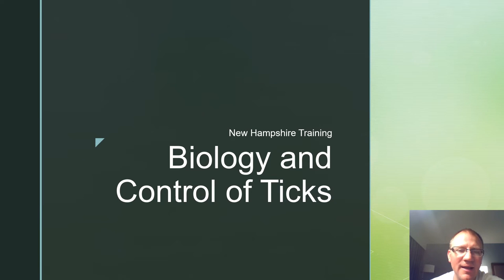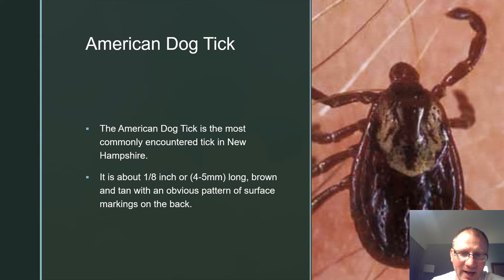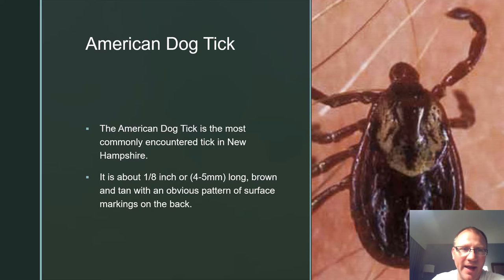This is the New Hampshire test on the biology and control of ticks. The American dog tick is the most commonly encountered tick in New Hampshire. It is about one-eighth inch or four to five millimeters long, brown and tan with an obvious pattern and surface markings on the back.